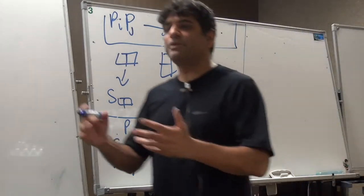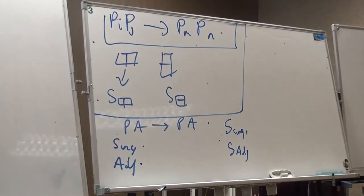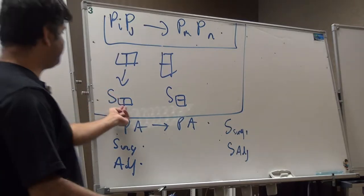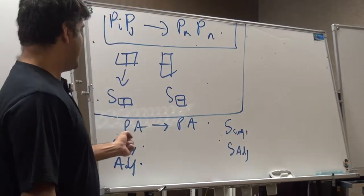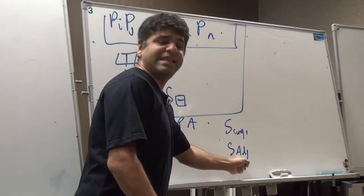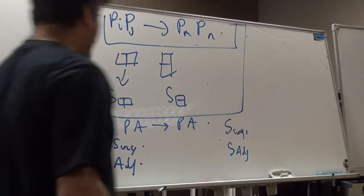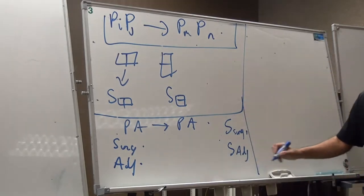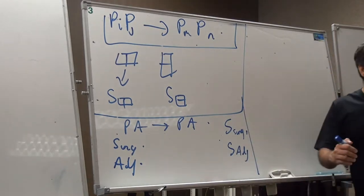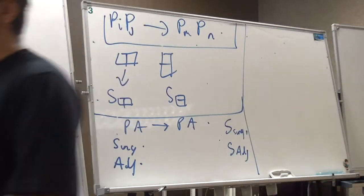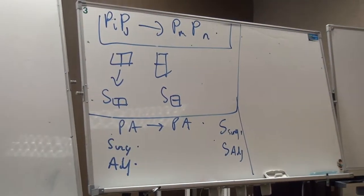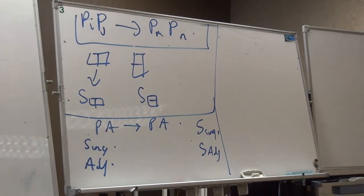So my goal is to compute these four functions: S-symmetric, S-antisymmetric, S-singlet, and S-adjoint. I remind you that in my last lecture, I reviewed what was known about these S-matrices in the non-relativistic limit, which was just a calculation by Aharonov-Bohm scattering.